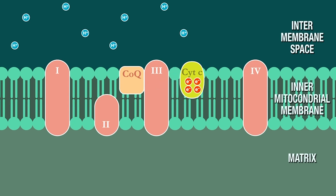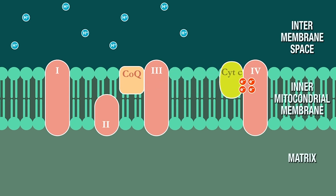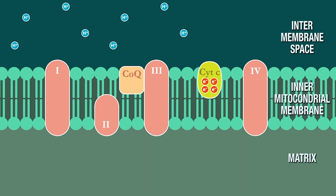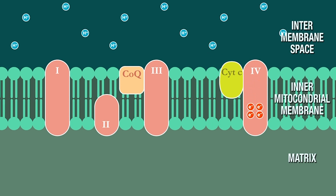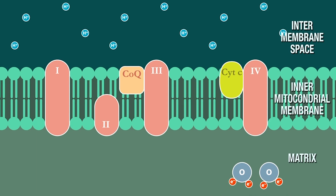Here at this step, we are moving electrons from complex three, and now getting them to complex four. Another name for complex four is cytochrome C oxidase. Cytochrome C was that mobile carrier collecting electrons at complex three and moving them to complex four. And now at complex four, we're oxidizing that and actually going to make water.